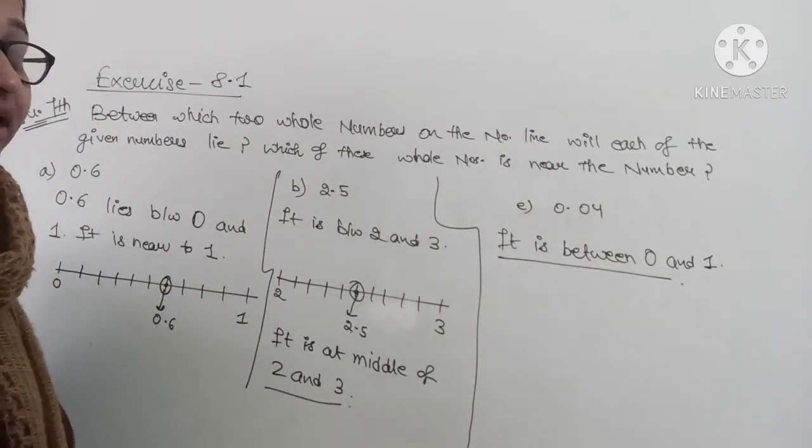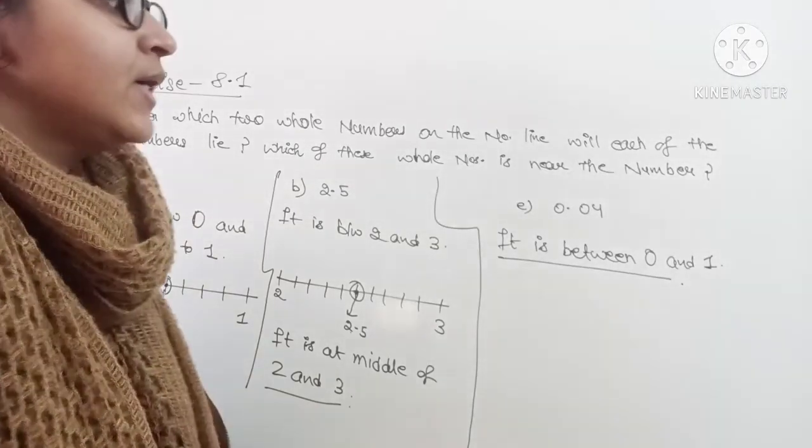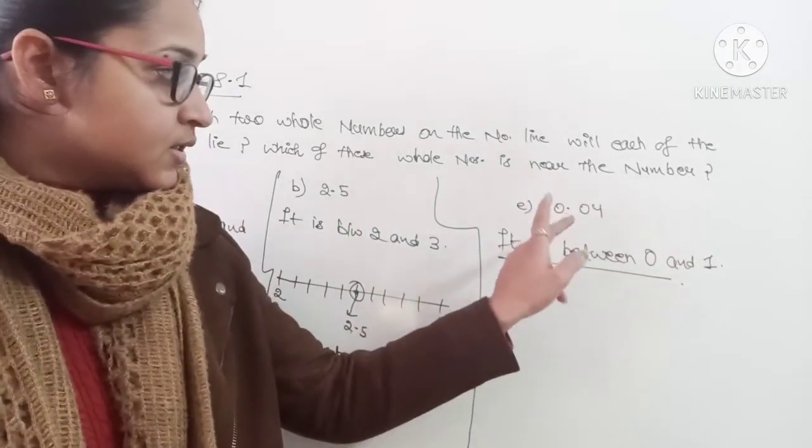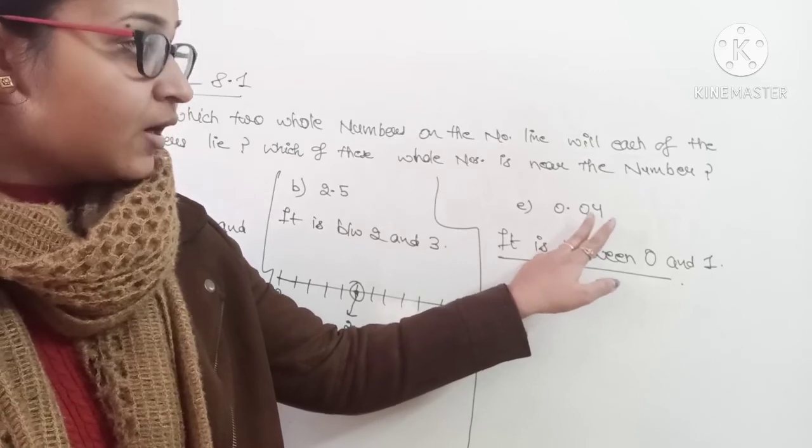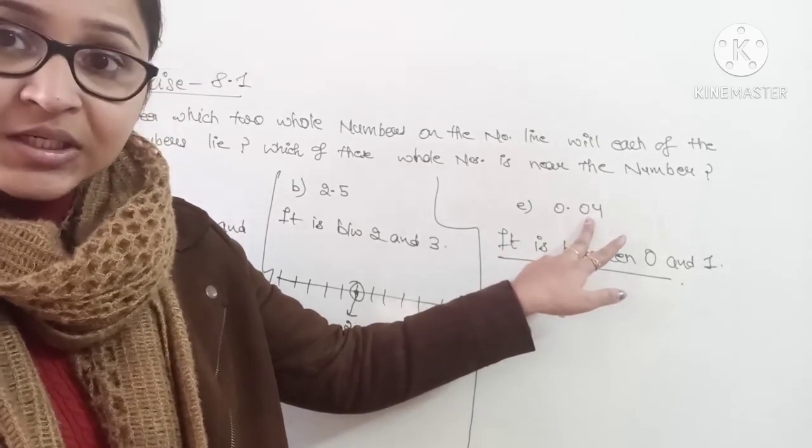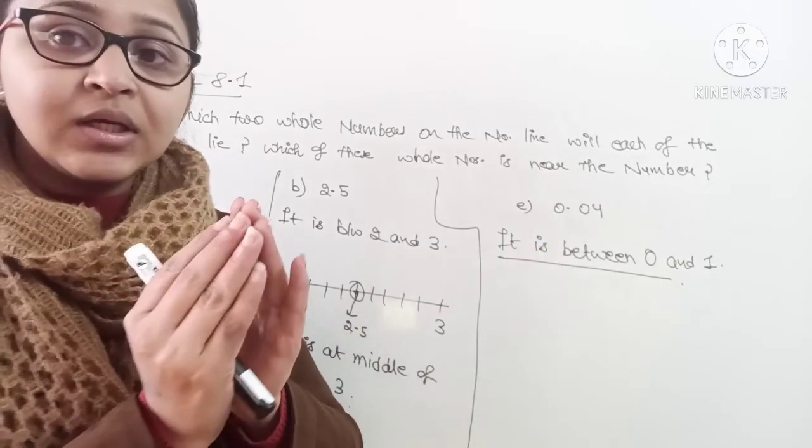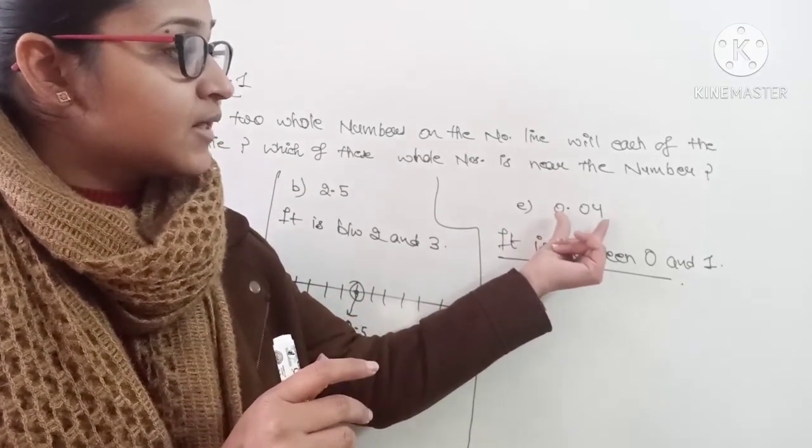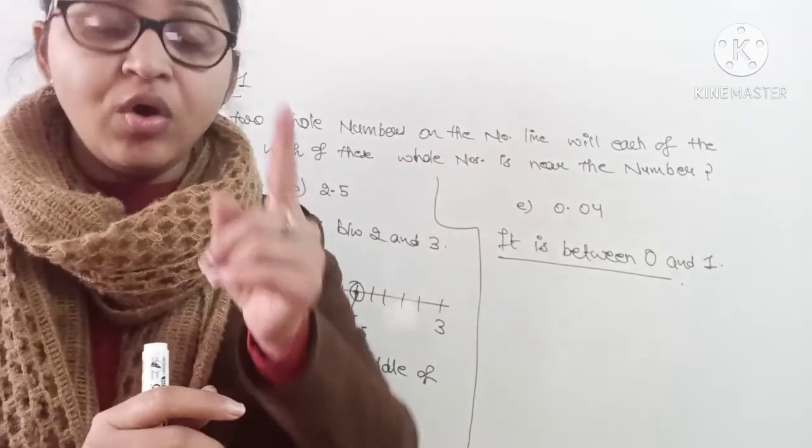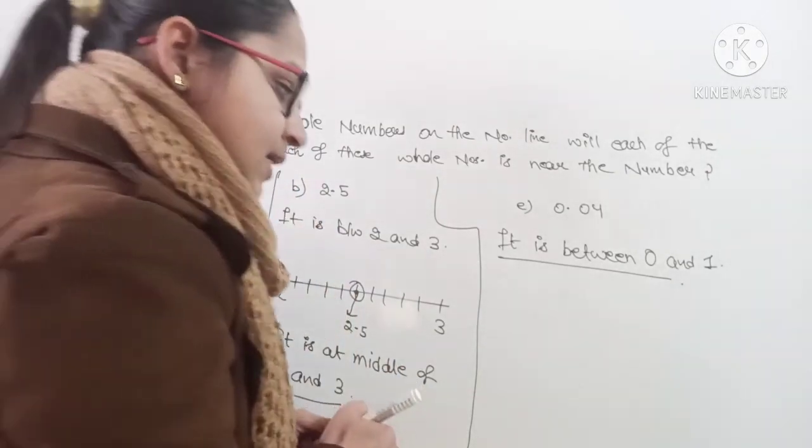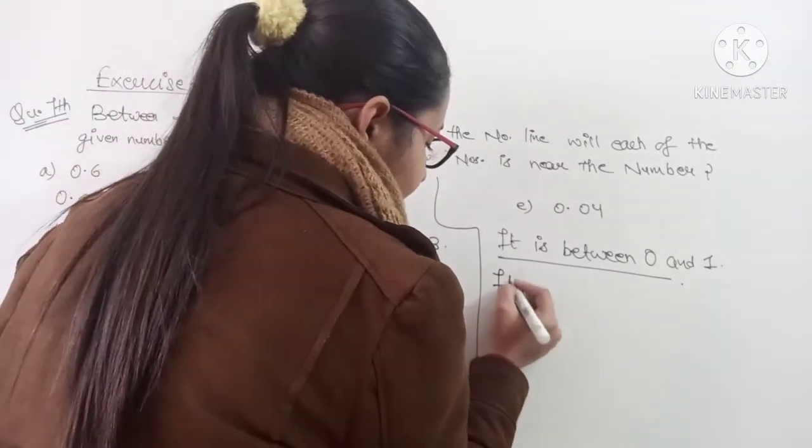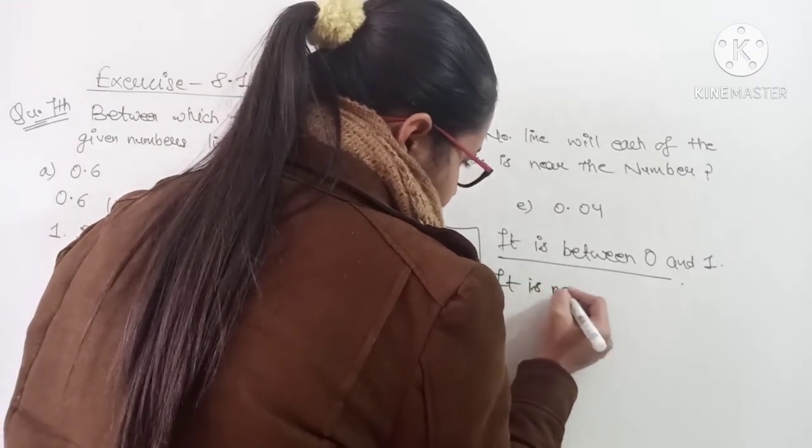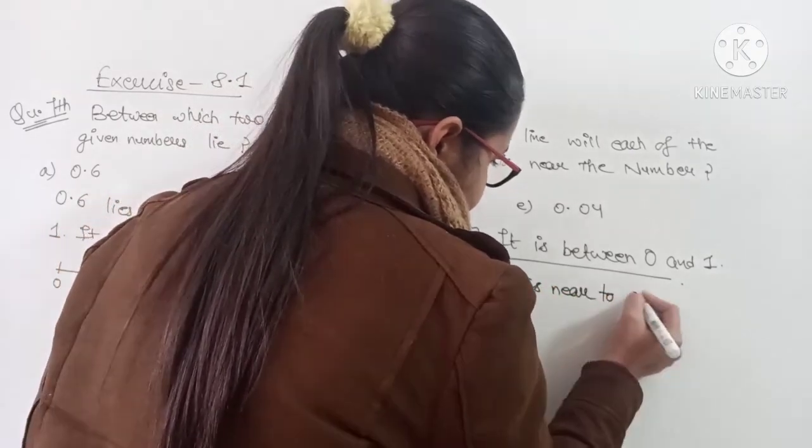Now you will have to tell which number, out of 0 and 1, is near to 0.04. See, 0 point, then again you are taking 0. It means you are again taking divisions. So you will see, you will visualize that this number is near to 0 in spite of 1. So you will write it is near to 0.